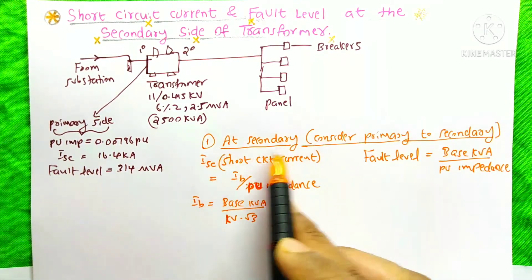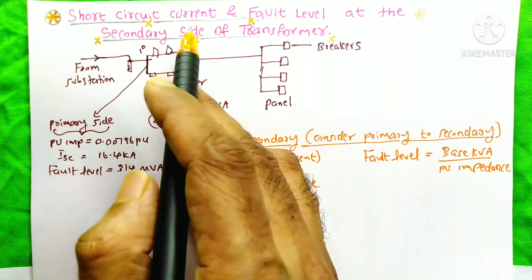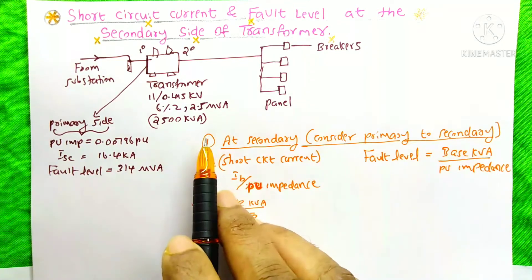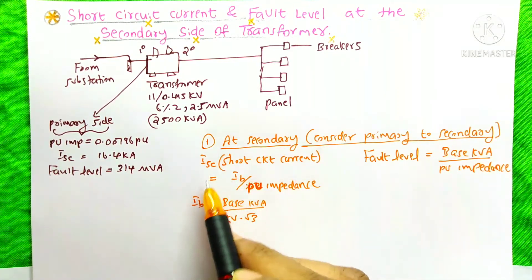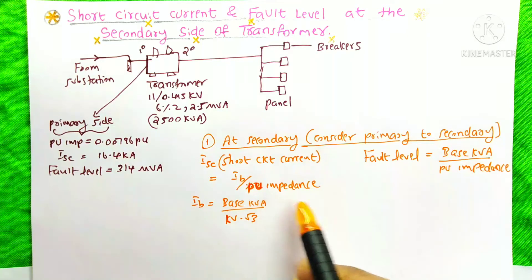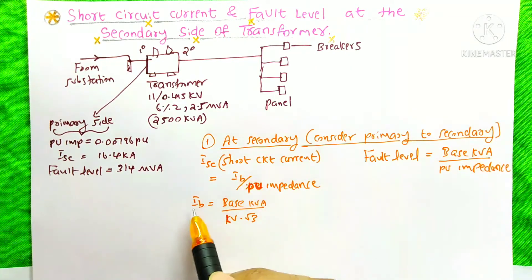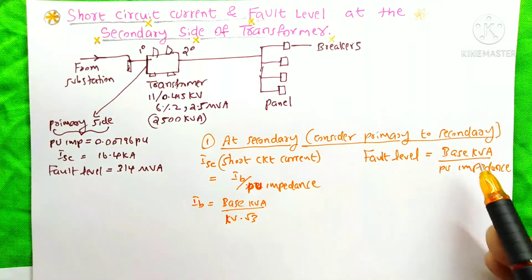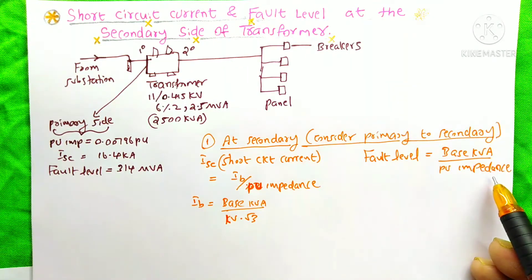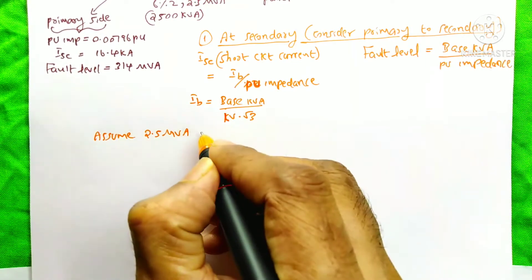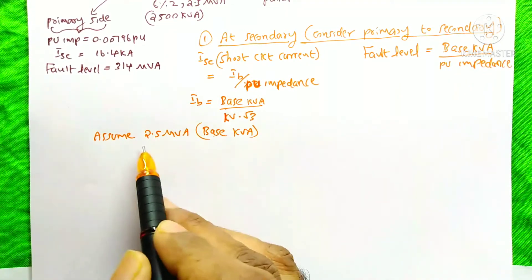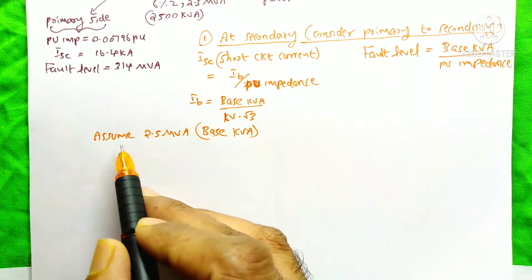First, we are going to calculate the short circuit current and fault level at the secondary side of this transformer. For that, we need to consider the primary to secondary side. The short circuit current equation is ISC equal to IB divided by per unit impedance, where IB is the base current. Base current equals base kVA divided by kV into root 3. The fault level equation is base kVA divided by per unit impedance. Here, we assume 2.5 MVA as our base kVA — the same as in the previous video. We need to assume the same base kVA everywhere in our calculation, otherwise the calculation will be wrong.